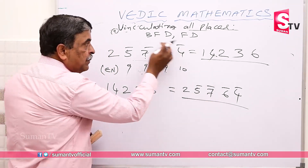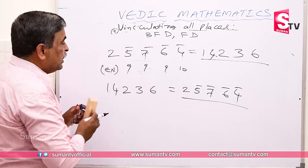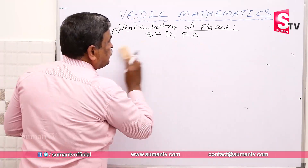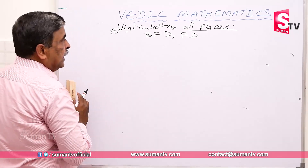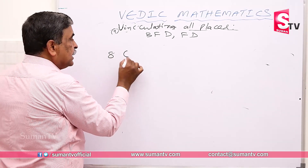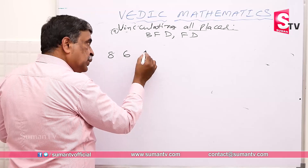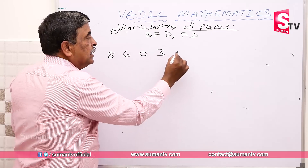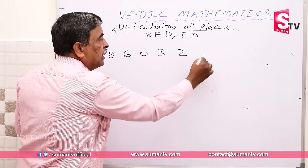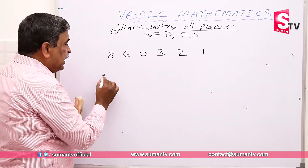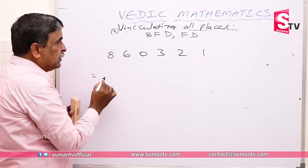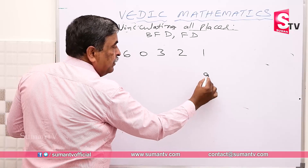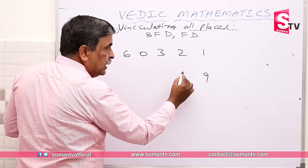We have a conversion. So we have a problem — if we have a problem, we will be clear. 8, 6, 0, 0 — so it will be clear: 0, 3, 2, 1. First vinculum — vinculum 8 is equal to. So devinculum complement — 9, devinculum complement — 7.